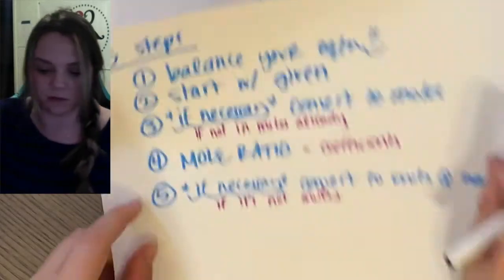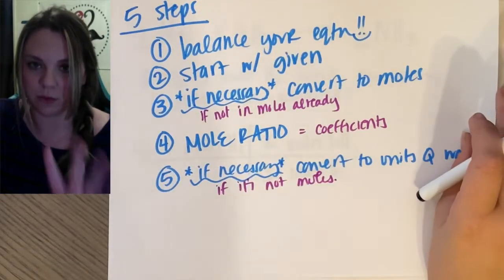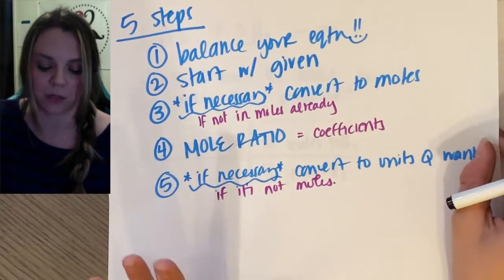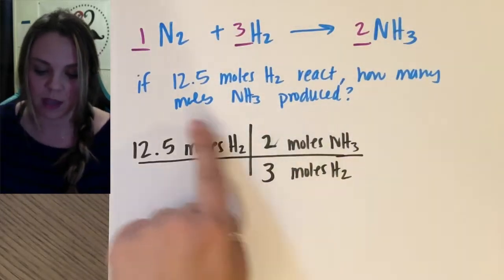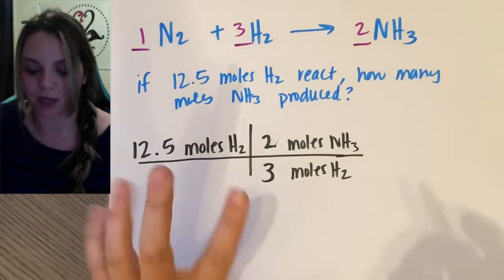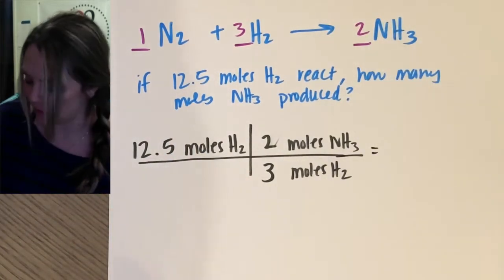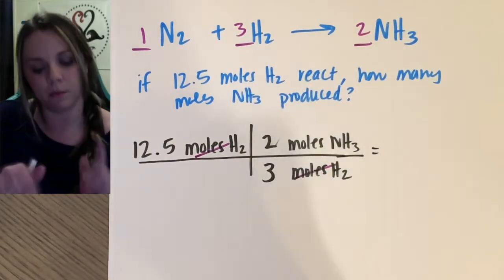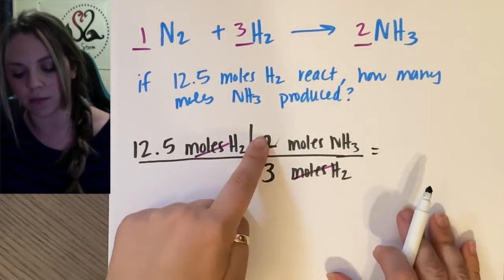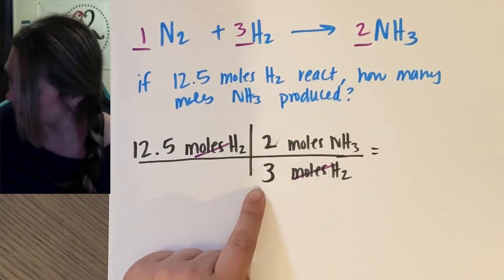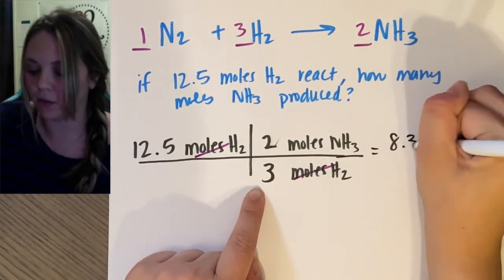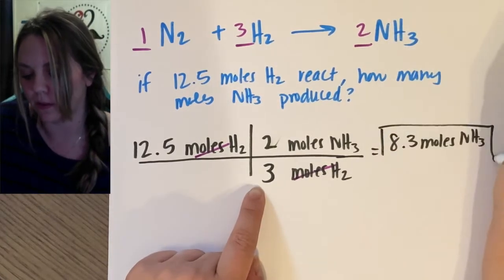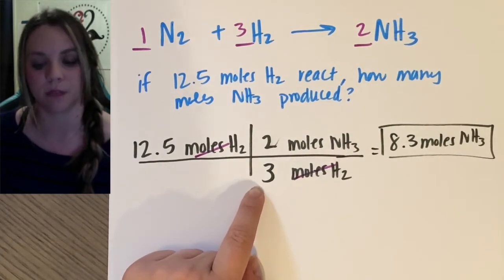Mole ratio, step four, done. Use my coefficients. Step five, if necessary convert units to what the question wants. How many moles of NH3 are produced? It asked me for moles, I don't need to do step five. Nice. So moles of H2 will cancel, and I in my calculator 12.5 times 2 divided by 3, and I get 8.3 moles of NH3 are produced. That's it.